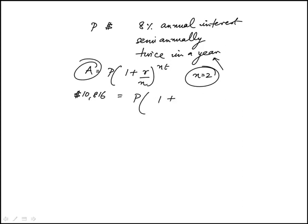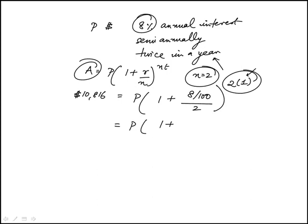So here the interest rate is 8%, so this would be 8 over 100, divided by 2, and then 2 times 1 because it's just one year. So there's two compoundings here. So that would be 1 plus 4 over 100, so it's going to be 0.04.